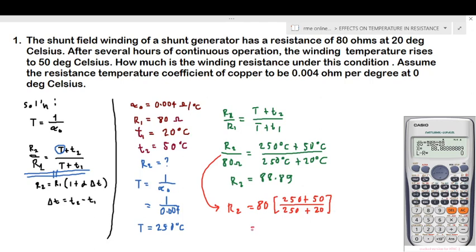Let's copy this to our calculator or input to our calculator. We have 80 times 250 plus 50 over 250 plus 20. Then equals, so we have 88.88 or 88.89. So 88.89 ohms. That is now our answer.